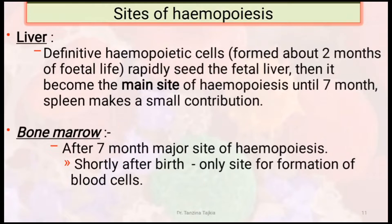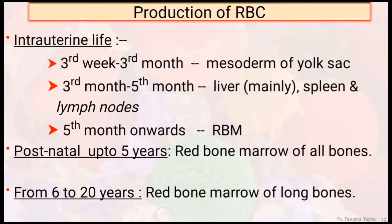The site of hematopoiesis: the liver, which is the definitive hematopoietic site, rapidly becomes the main site of hematopoiesis until 7 months; the spleen makes a small contribution. After 7 months, the bone marrow is the major site of hematopoiesis. Shortly after birth, it is the only site of formation of blood cells. So in intrauterine life: 3rd week to 3rd month — mesodermal yolk sac; 3rd month to 5th month — liver mainly, with spleen and lymph nodes also making a small contribution; 5th month onward — red bone marrow.